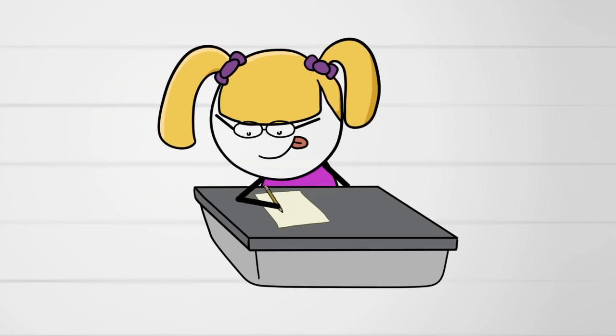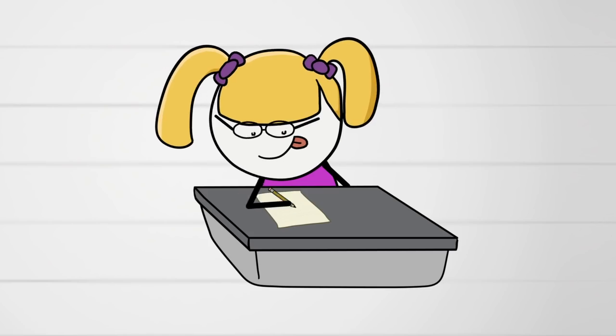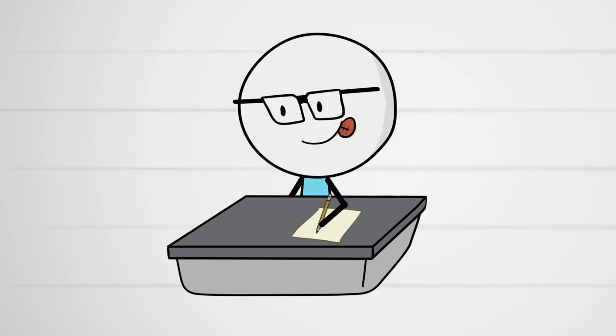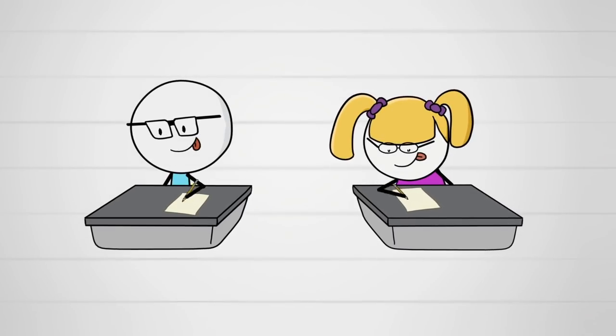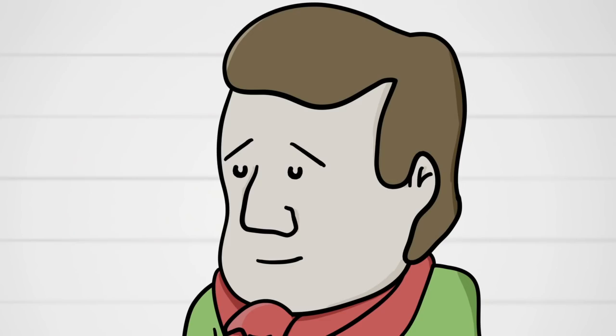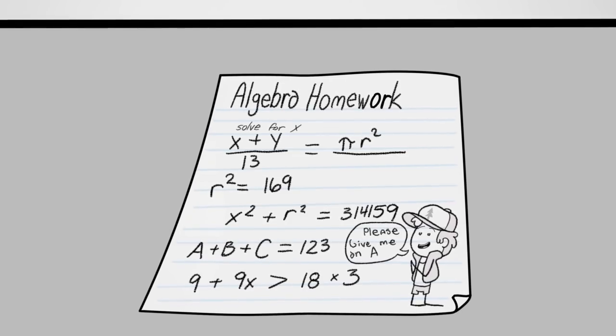You know those kids who would diligently and aggressively take notes? The goody two-shoes? I'd go undercover as one of them. And while it looked like I'd be in second period taking detailed notes about the fifth president of the United States, James Monroe, I was actually doing algebra homework for third period.